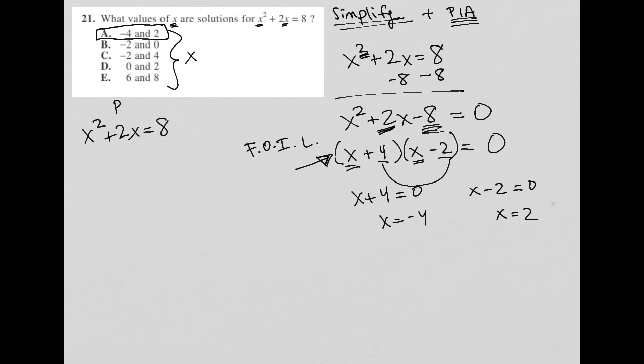So if I start over with x squared plus 2x equals 8, and I instead use the plug-in answer strategy, I would see that when I test choice A, choice A says that x is equal to negative 4. If x equal negative 4, I should be able to plug it in for x and get a true statement. So negative 4 squared plus 2 times negative 4 should equal 8.